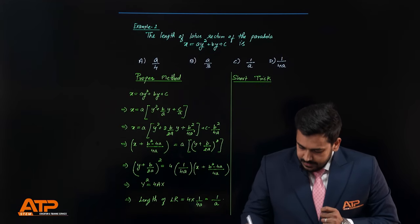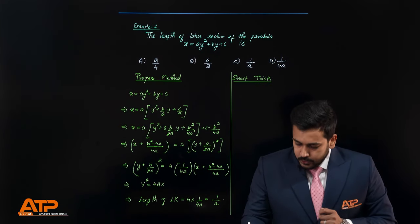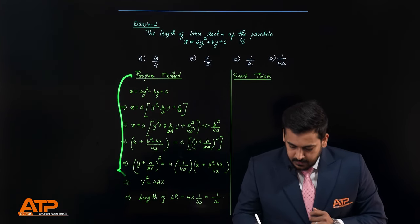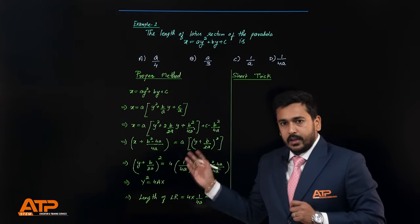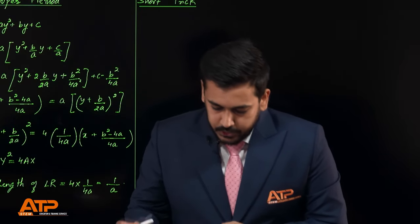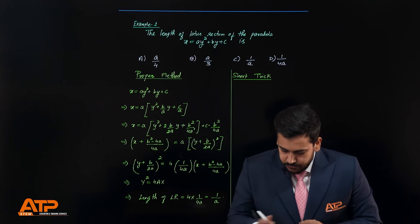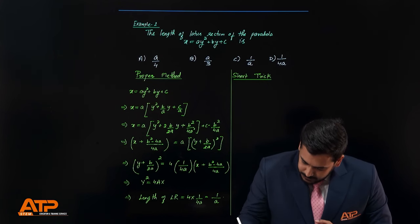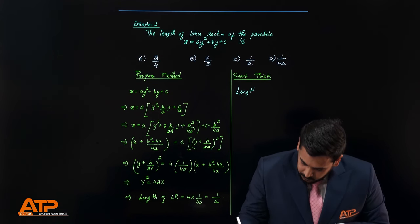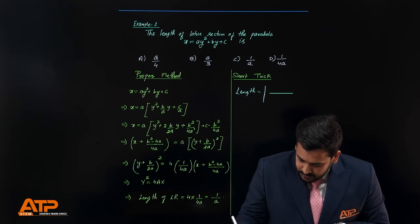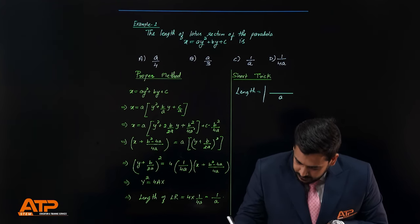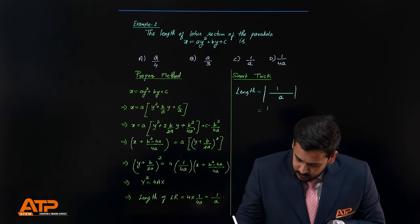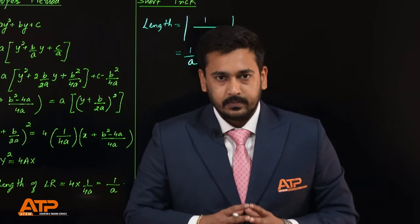If we want to find the length of the latus rectum of the parabola x = ay² + by + c, we use the short trick. The equation is in y² form, so we write the coefficient of y² in the denominator — that is a. The coefficient of x is 1. So the length of the latus rectum becomes 1/a. The answer is option C.